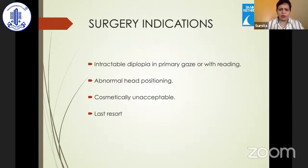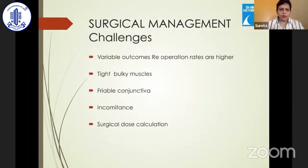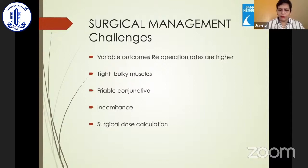Surgery should be reserved for patients with large angles, cosmetically unacceptable strabismus, or abnormal head positioning with intractable diplopia. Challenges of surgery include variable outcomes, difficulty assessing disease activity, tight and bulky muscles, friable conjunctiva that tends to tear, and incomitance — sometimes even between primary gaze and down gaze — making surgical dose calculation always a challenge.